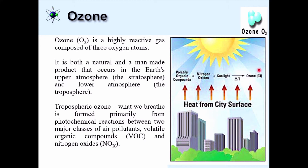Tropospheric ozone is called a secondary air pollutant. Primary pollutants like oxides of nitrogen and volatile organic compounds — hydrocarbons — are primary air pollutants. These two primary air pollutants react together in the presence of sunlight to form ozone as a secondary air pollutant. The stratosphere is present 20 to 30 kilometers above the Earth's surface.